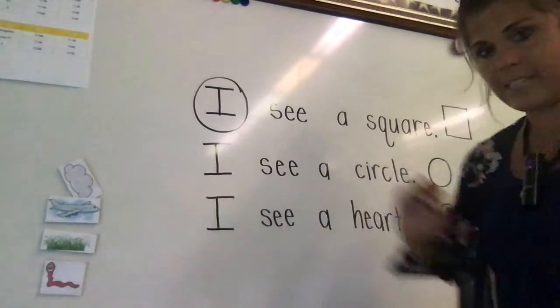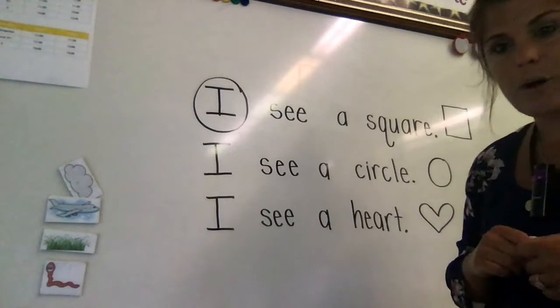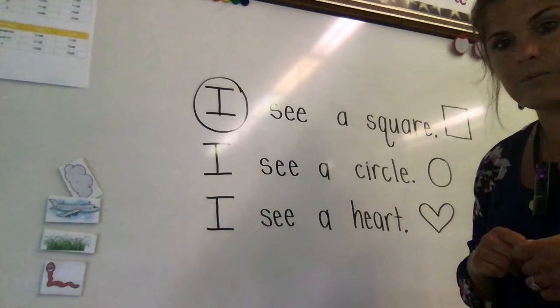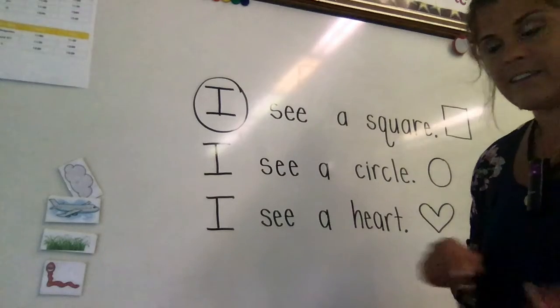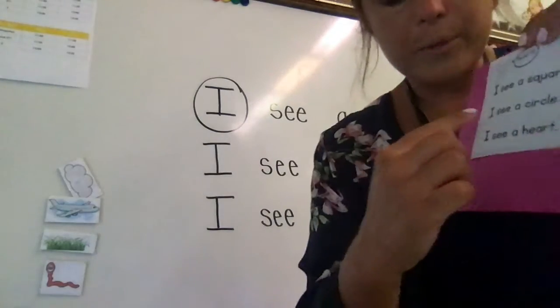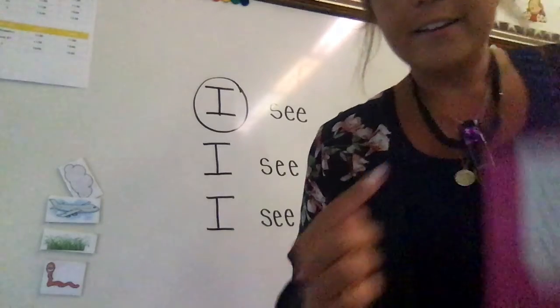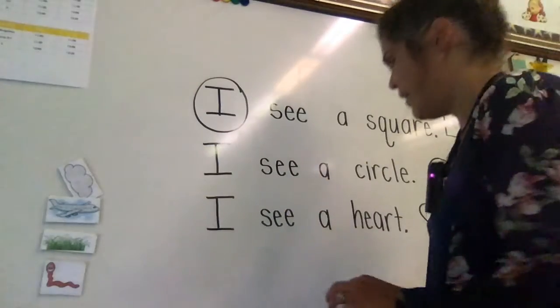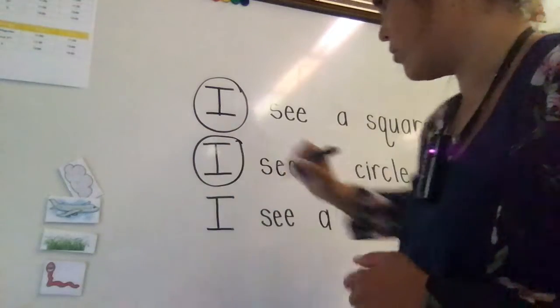Alright, now we're on the next sentence. Can you guys point to I in the next sentence? Where do you see sight word I? If you are pointing here or if you are pointing here on your paper, then you are correct. Everybody find sight word I and circle it.